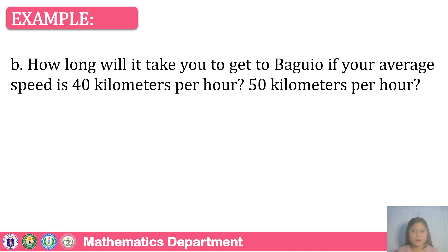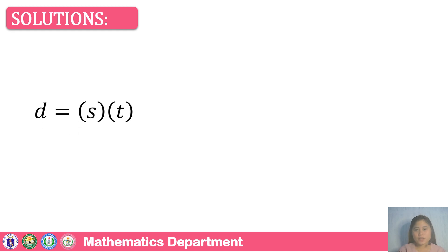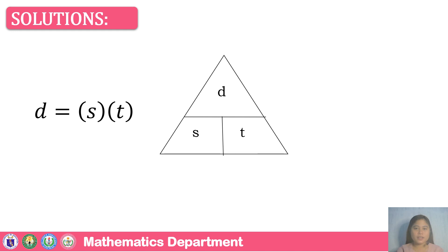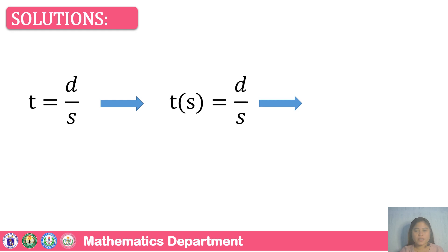How about 50 kilometers per hour? You know how to calculate distance — it has the form D equals S times T. Using the DST triangle: D stands for distance, S stands for speed, and T stands for time. Since T is the unknown, the formula to be used is T equals D over S. Since the problem asks to construct a function S, it should be written as T of S equals D over S, with distance fixed at 285 kilometers.